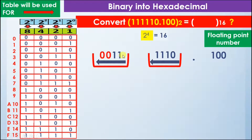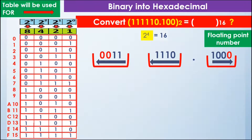Moving away from the decimal point on the right side, we have 3 bits in that group, so we add 1 additional zero to make a complete group of 4. Now all groups of 4 bits are complete. We look up 1 1 1 0 in the table — it is equal to E in hexadecimal, so we write 1 1 1 0 as E.